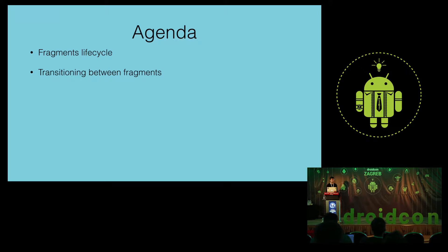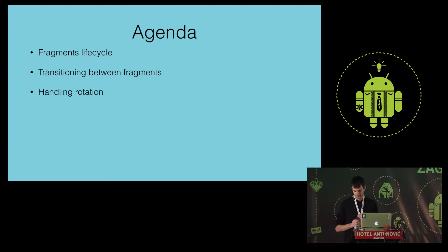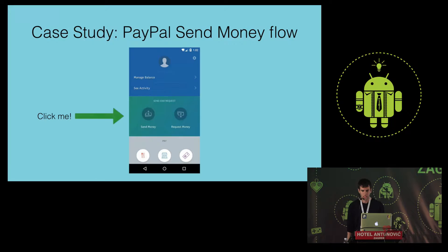I'd like to talk about a few things: the fragment lifecycle, how to correctly use fragment transactions, and how to implement fragments to handle rotation correctly. Instead of talking in abstract terms of fragment A and fragment B, I'd like to use the send money flow of the PayPal app as a case study.